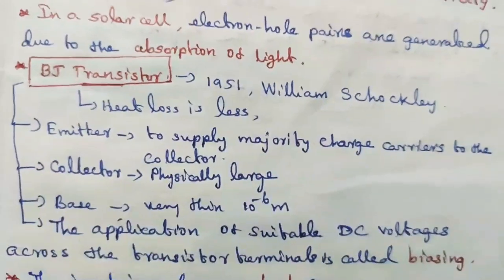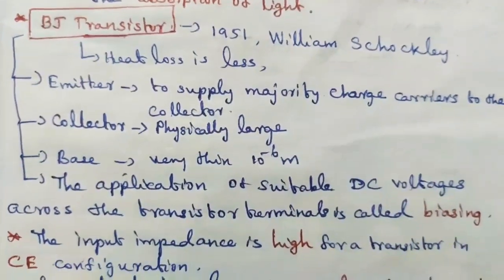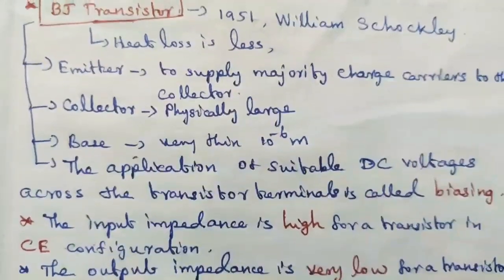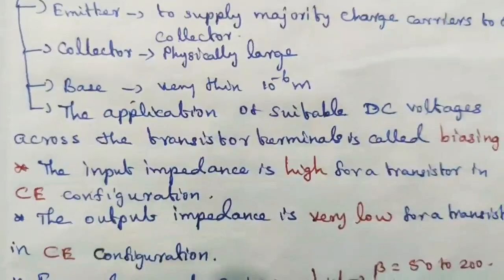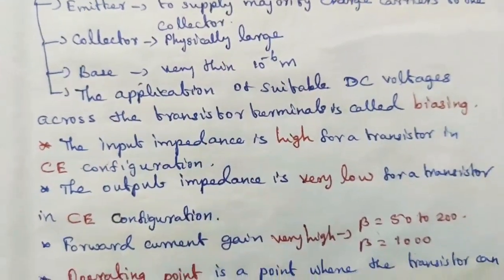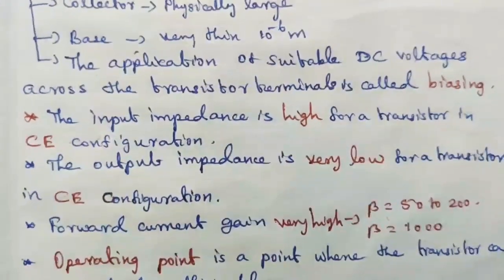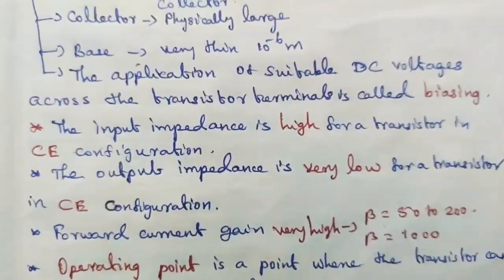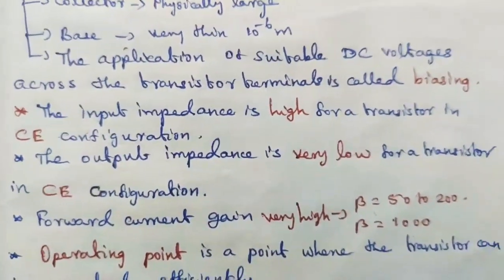The application of suitable DC voltages across the transistor terminals is called biasing. The input impedance is high for a transistor in CE configuration. The output impedance is very low for a transistor in CE configuration. Forward current gain is very high. Beta value is 50 to 200. For an ideal transistor, beta value should be 1000.